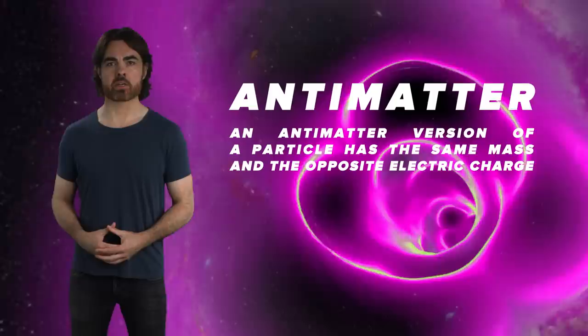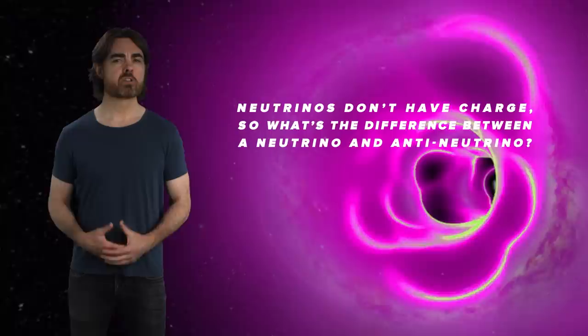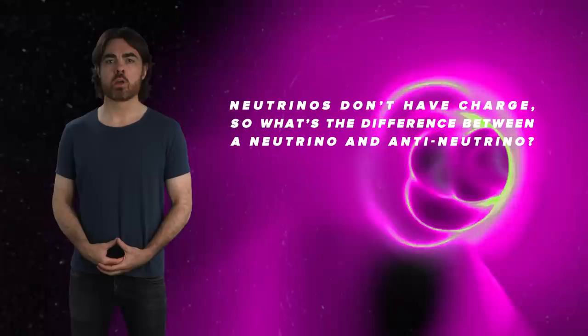So let's drop down into antimatter. An antimatter version of a particle has the same mass and the opposite electric charge. So an electron has a charge of negative one, and an antielectron has a charge of plus one.